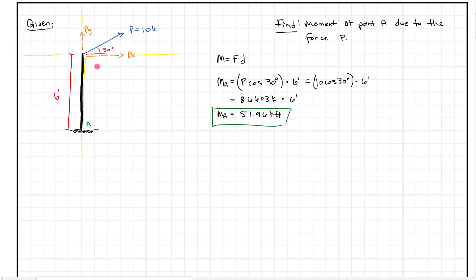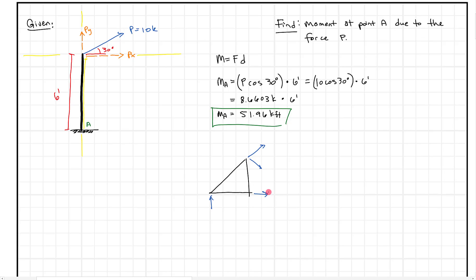In some cases, it also makes sense to apply the force at some other point. For example, with a truss using the method of sections, we might have a truss with several forces, two of which come down and intersect at a point below. If we're summing moments about that point, we need to think about where a good place is to apply this force.